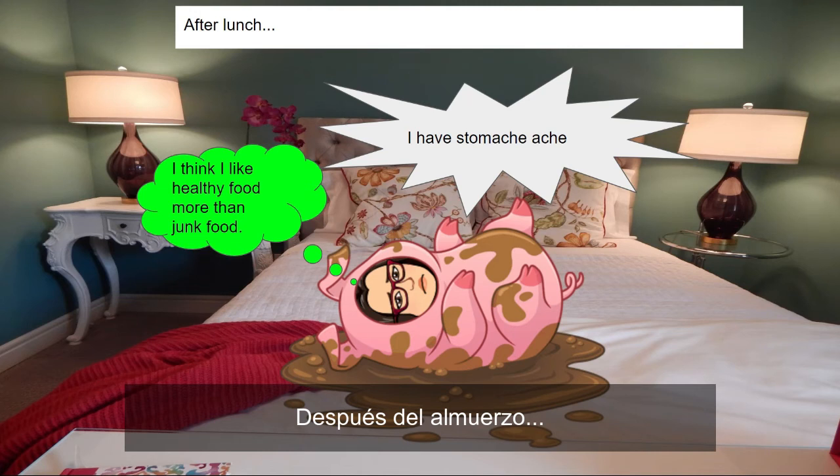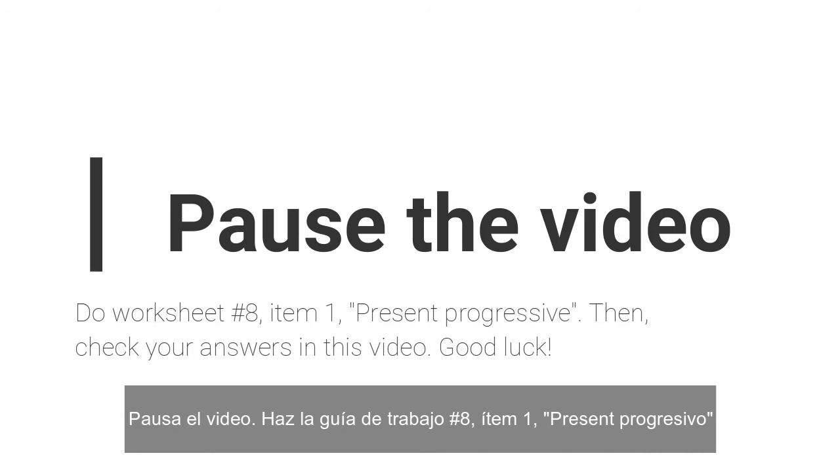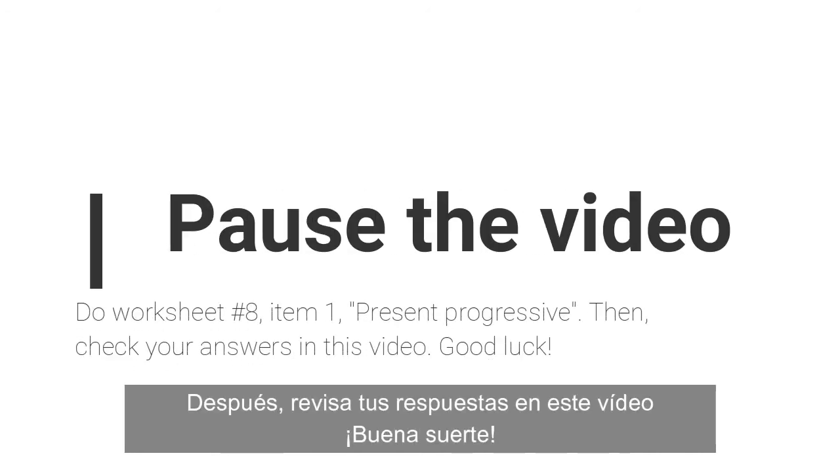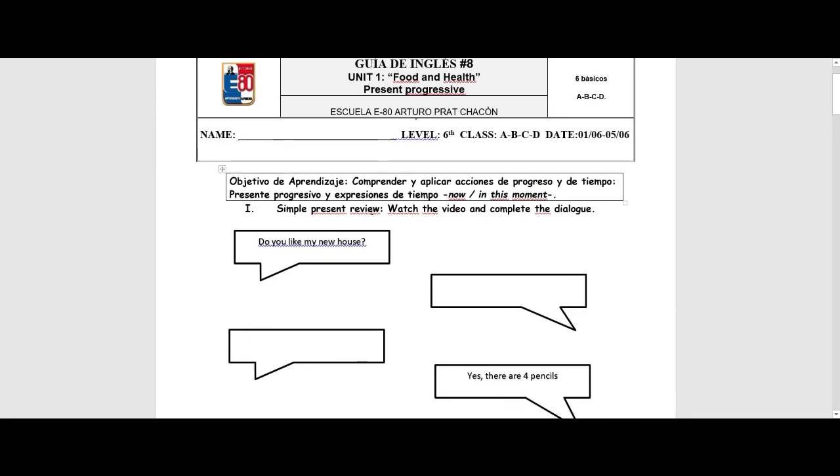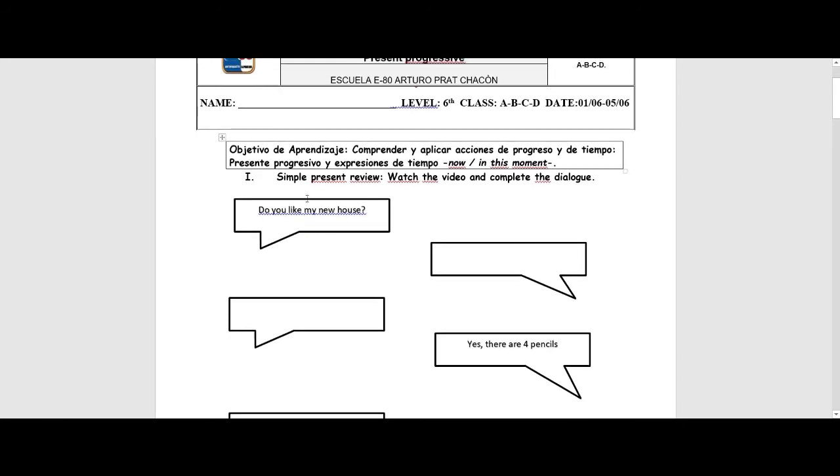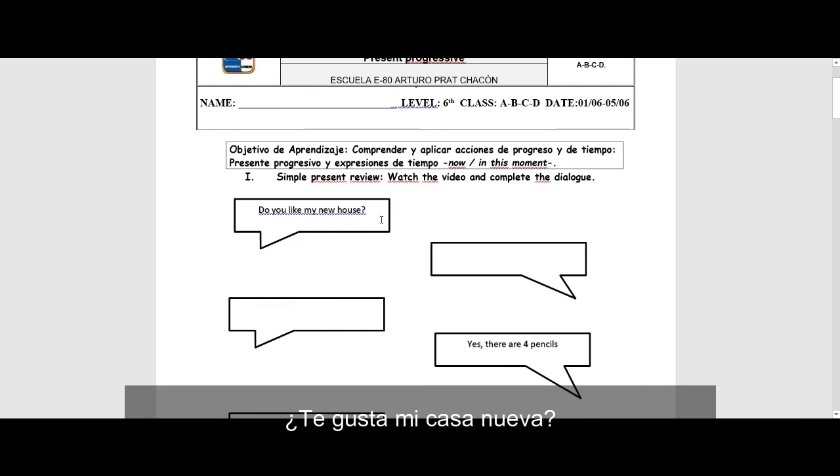After lunch, I have a stomachache. I think I like healthy food more than junk food. What do you like, Lola? Guía de inglés número 8, Unit 1, Food and Health, Present Progressive. El objetivo de aprendizaje de esta guía es comprender y aplicar acciones de progreso y de tiempo, presente progresivo y expresiones de tiempo, now, ahora, in this moment, en este momento. Item número 1, Simple Present Review. Watch the video, complete the dialogue.